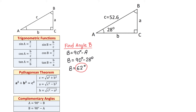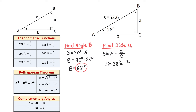Next, we will find side A. We will use the formula sine of angle A equals A over C. We replace angle A and hypotenuse C with the given numbers: sine of 28 degrees equals A over 52.6. To solve for A, we multiply both sides by 52.6, so A equals 52.6 times sine of 28 degrees. Using a calculator, we get that A equals 24.7 units.